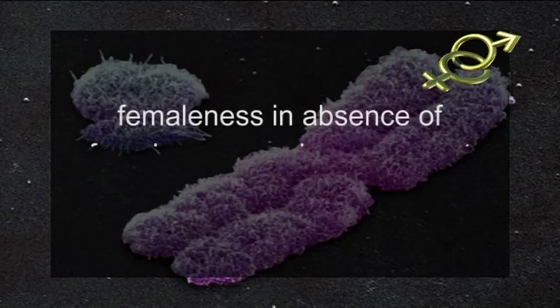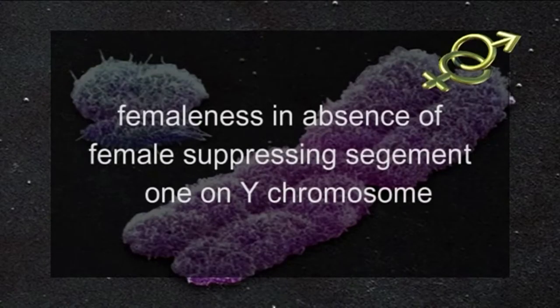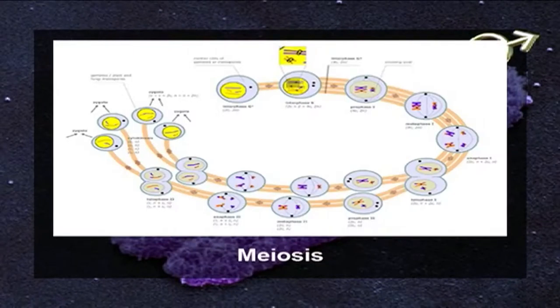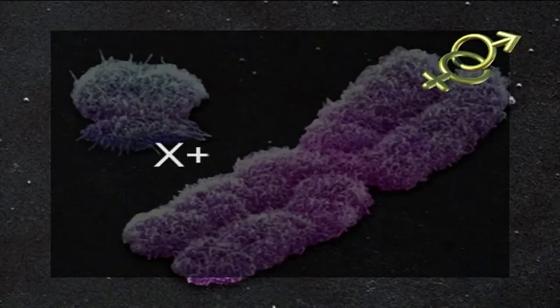The sex of an individual is determined by which paternal sex chromosome — X or Y — is inherited at fertilization. X and Y sperm, as reproductive cells, each contain only one of the two sex chromosomes as a result of having undergone meiosis, a form of cell division that produces daughter cells containing only one member of each chromosome pair. All eggs therefore contain an X chromosome, but half of sperm will contain an X chromosome and the other half a Y chromosome.